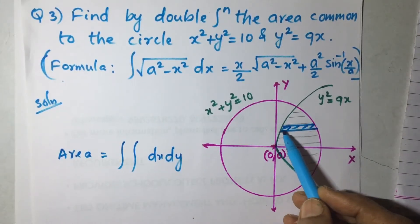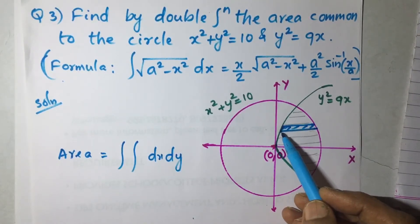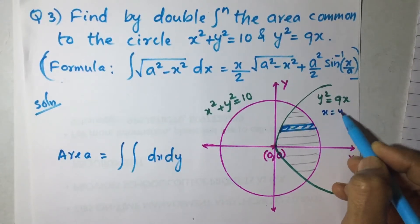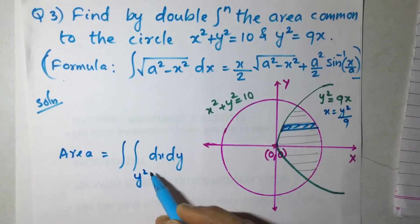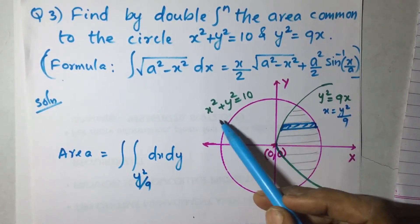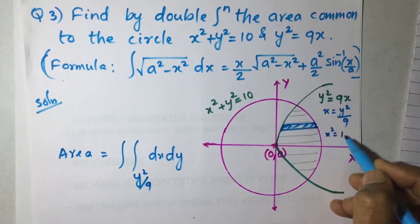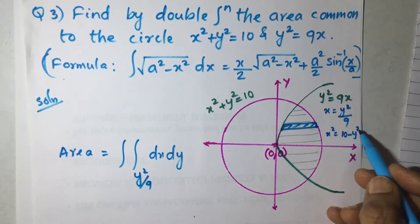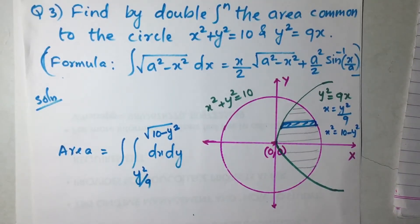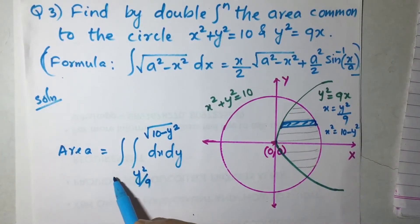When the strip is parallel to the x-axis, its left part gives the lower limit of x. Since y² = 9x, x = y²/9, so the lower limit of x is y²/9. For the upper limit, the right end of the strip touches the circle x² + y² = 10, so x² = 10 − y², giving x = √(10 − y²) as the upper limit of x.